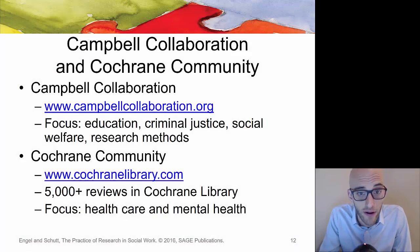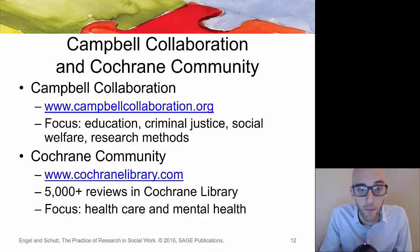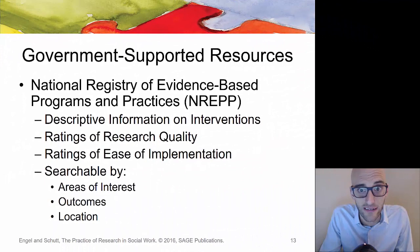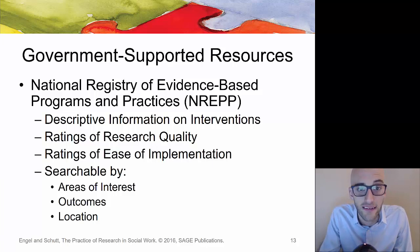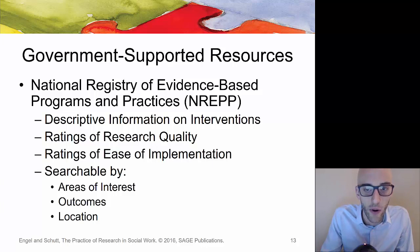The Campbell Collaboration covers education, criminal justice, social welfare, and research methods — all applicable to social work research. The Cochrane Community focuses more on healthcare and mental health. There are also government-supported resources such as the National Registry for Evidence-Based Programs and Practices, NREPP, which provides descriptive information, rating of research quality, and rating of ease of implementation. You can search by areas of interest, outcome, and location to specify the type of question for the population you're working with.